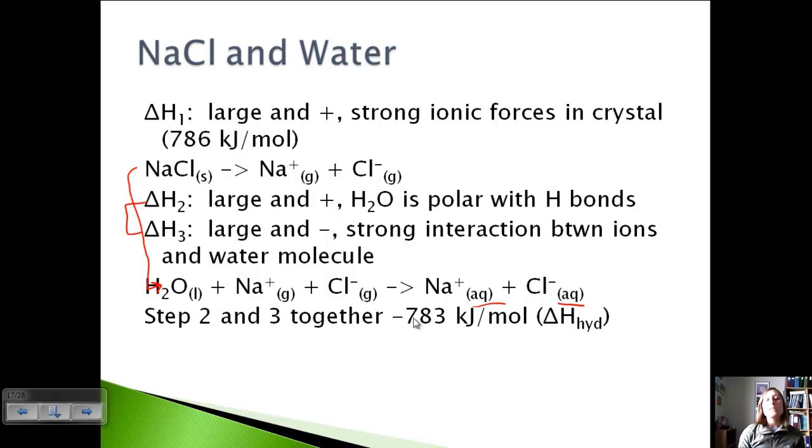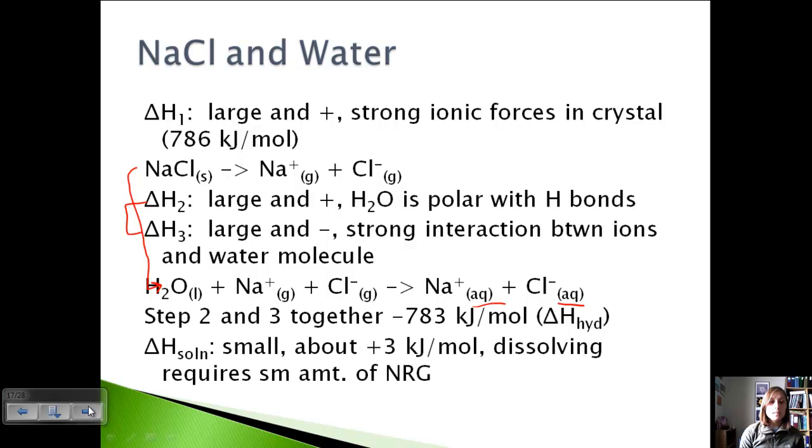And so if we look at step 2 and 3, the delta H on this, when we add them, is negative 783 kJ/mol. So although this one's large and positive, this one is also large and negative. So if we take our positive 786 and our negative 783, our delta H total is going to be small, and it's about a positive 3. Okay, because we took our negative 783 and our positive 786 and put them together so we got a positive 3. So what this means is that dissolving does require a small amount of energy, but that this is actually going to dissolve because our delta H of solution is very tiny.